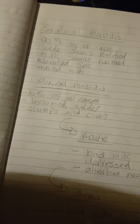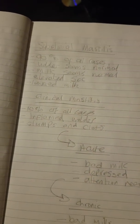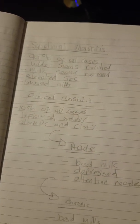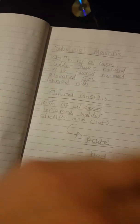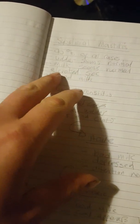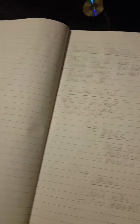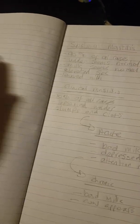Subclinical mastitis is 90% of all cases. The udder seems normal, the milk seems normal, but the cell count evaluates, you know, shot up basically and the cow will have low milk output.